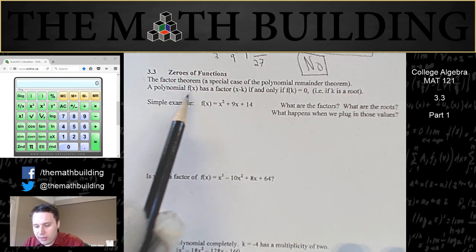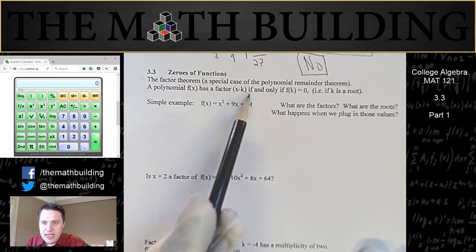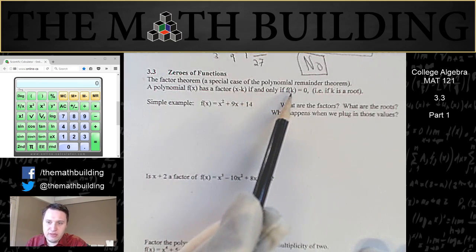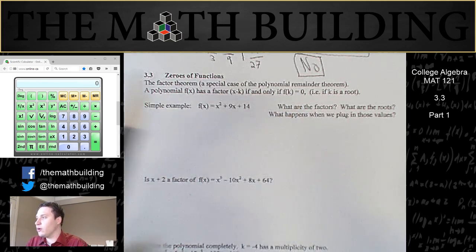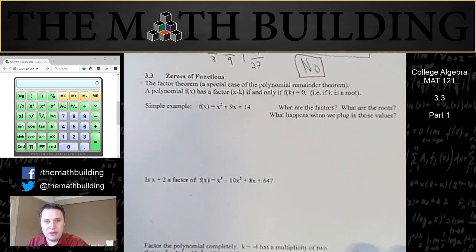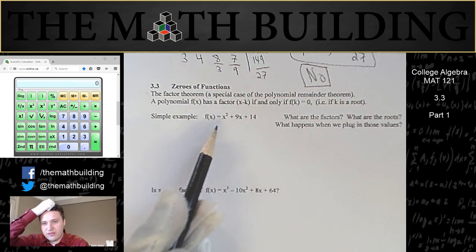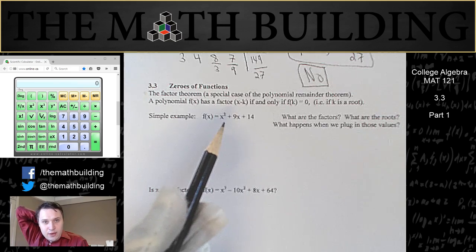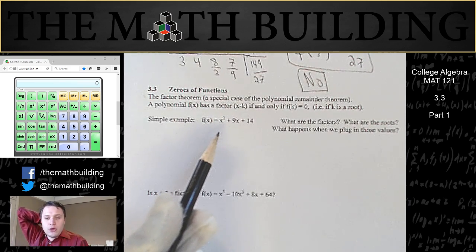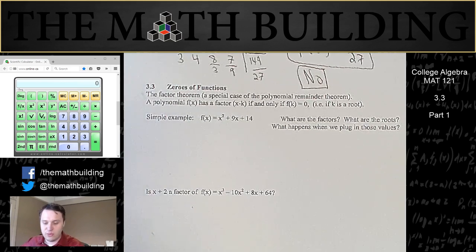A polynomial has a factor x minus k if and only if f of k is equal to 0. So what we're going to be doing is finding the roots, and that means we're going to be using synthetic division to keep playing around until we get a remainder of 0. For example, consider f of x is equal to x squared plus 9x plus 14. You probably know how to factor that, but I'm going to show you how to use synthetic division to solve this just for practice because this one's a little bit easier.